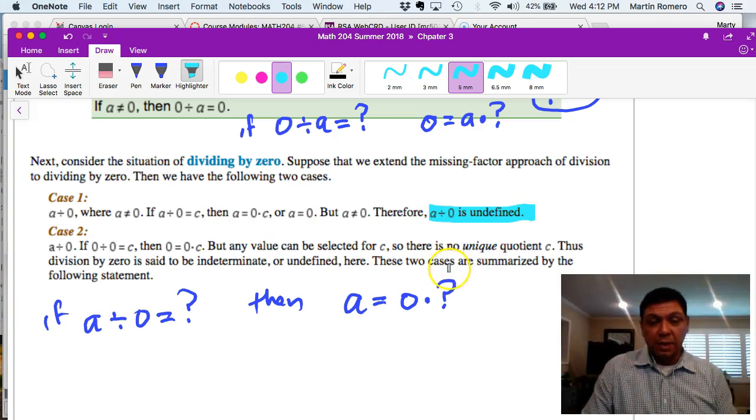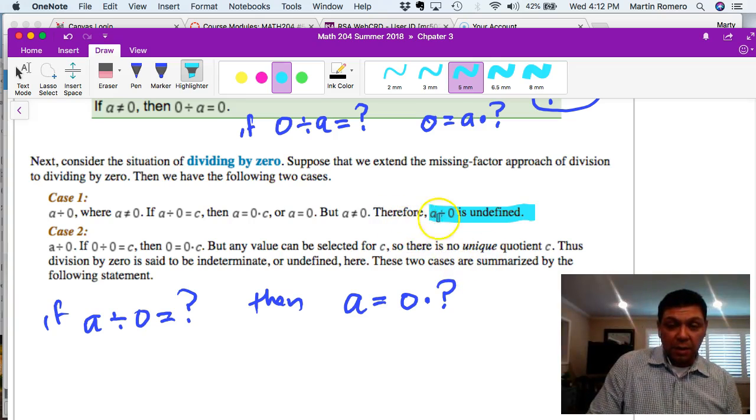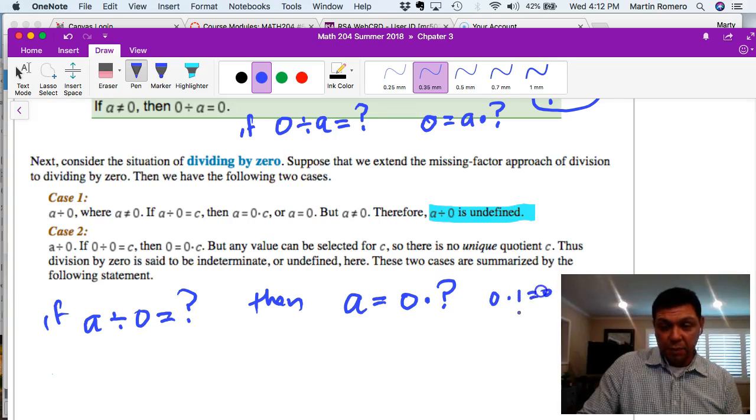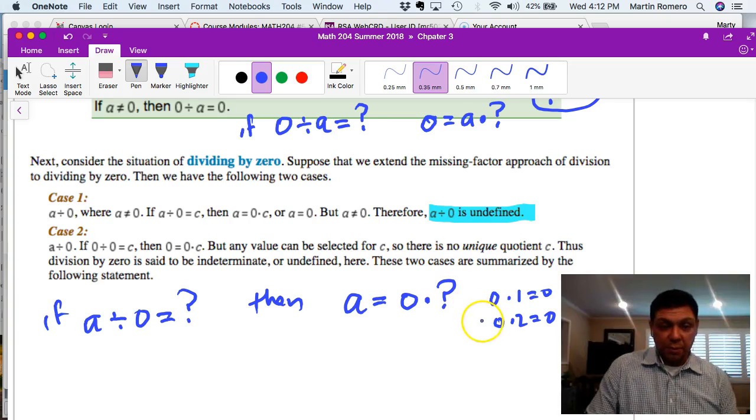We can't, there's nothing times zero to give you a. And so therefore we make a statement here that a divided by zero is undefined. There is no answer, a divided by zero is undefined because what can the question mark be? If you do some examples, zero times one equals zero, zero times two equals zero, so no matter what number you put in here you're not going to get a, you'll just get some zero.